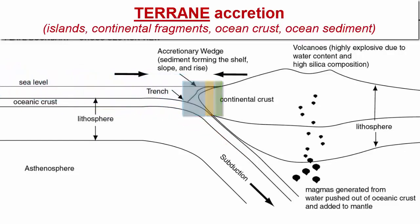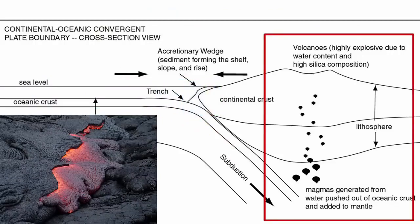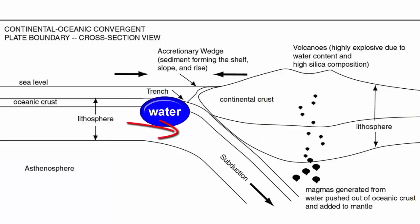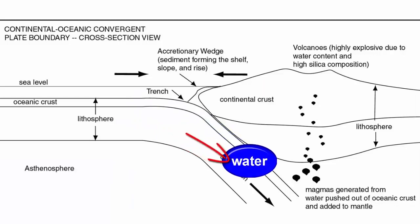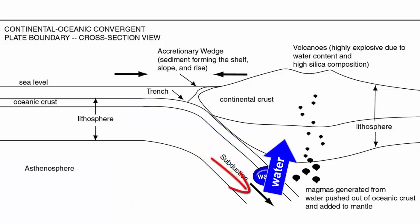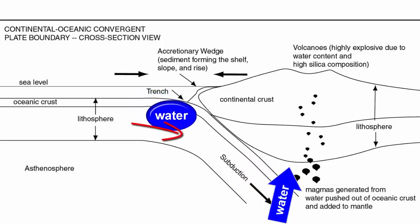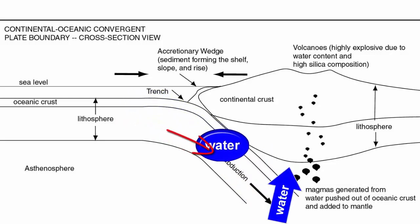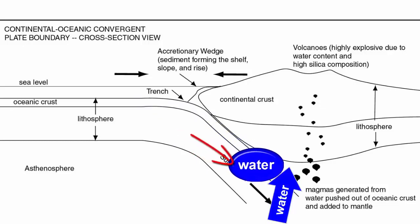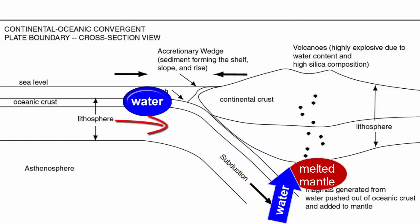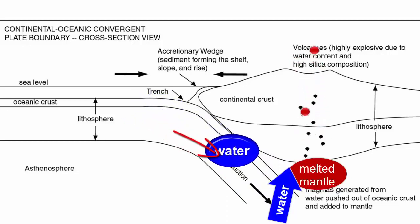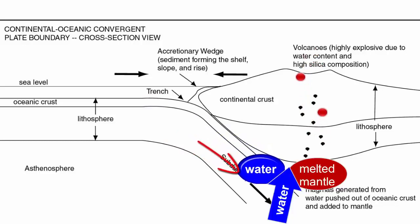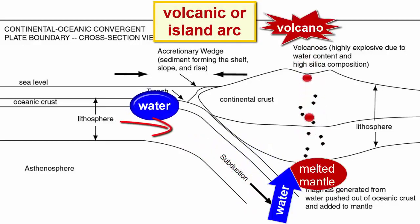The other source of new continental material are the volcanic eruptions that happen alongside subduction. When ocean crust subducts, it carries a large amount of water that has soaked into the sediment over millions of years. That water is squeezed out by high pressure at depth. Because water is less dense than anything else, it rises into the overlying asthenosphere, reducing the melting point and causing it to melt. That molten magma rises to the surface and erupts in a chain of active volcanoes known as a volcanic arc or island arc.